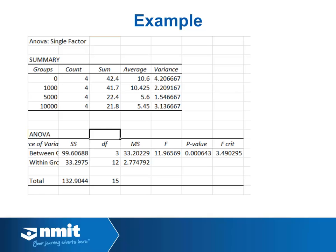Excel also gives us a P value — the probability that the null hypothesis is correct. The P value is 0.000643. At 95% confidence, we reject the null hypothesis if the P value is below 0.05 — this is well below 0.05, so they're definitely statistically significantly different. At 99% confidence, we'd need the P value to be less than 0.01 to reject the null hypothesis. Our null hypothesis was that all means are the same, and with a P value this small, we reject it and accept the alternative — that not all means are the same.